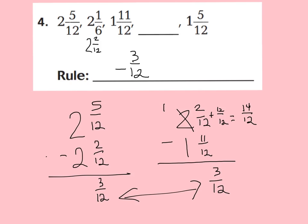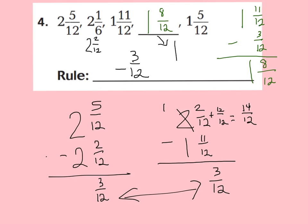Let's find the missing term in our pattern. We're going to subtract 3 twelfths from 1 and 11 twelfths. 11 minus 3 is 8 twelfths, and we bring down the 1 whole. So the missing term in our pattern is 1 whole and 8 twelfths. For those good at simplifying fractions, 8 twelfths can be simplified — divide numerator and denominator by the greatest common factor of 4 — giving 2 thirds. So the missing term can also be considered 1 whole and 2 thirds.